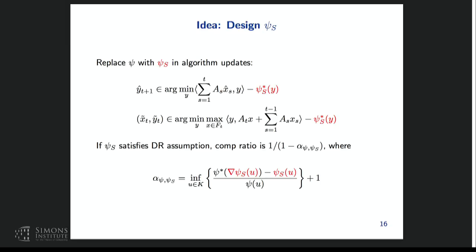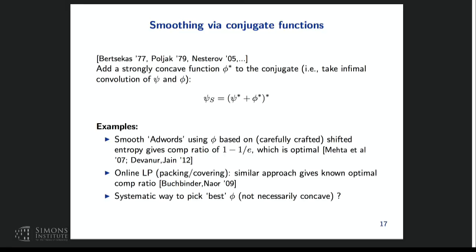This connects to a related idea in optimization: smoothing via conjugate functions, used in convex optimization for non-smooth problems. You take a non-smooth problem, smooth it, solve with gradient descent, and trade off the smoothing amount with complexity. This idea goes back to Bertsekas, Polyak, Moreau, and others. The way to smooth is by adding a strongly concave function to the conjugate of the original function, constructing psi_s through a good choice of phi, then double conjugation.